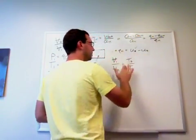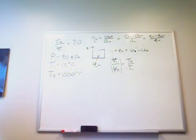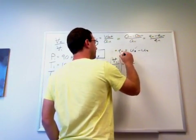So T2 over T1 is V1 over V2 to the K minus 1.